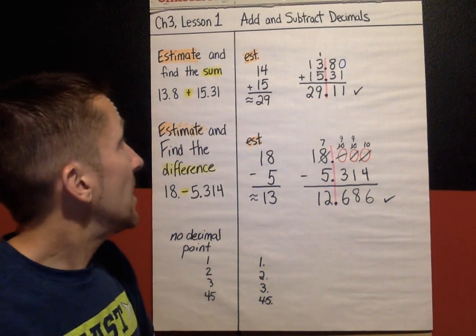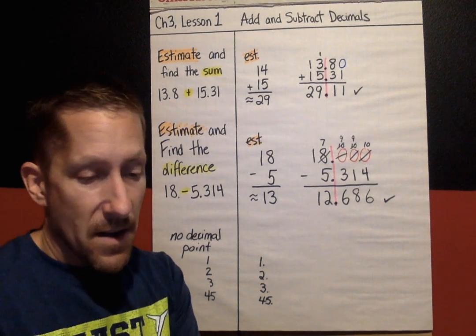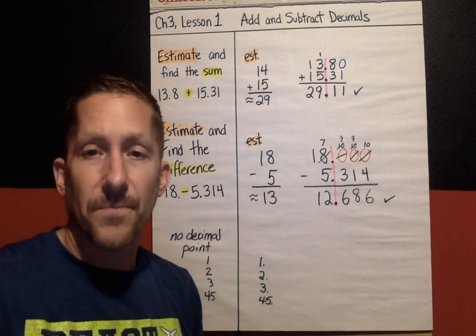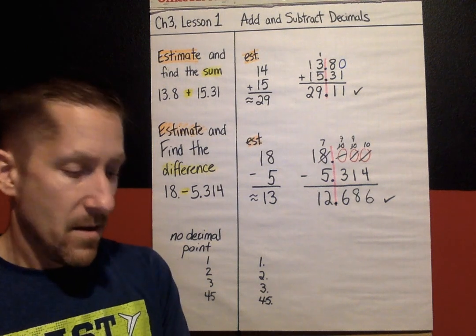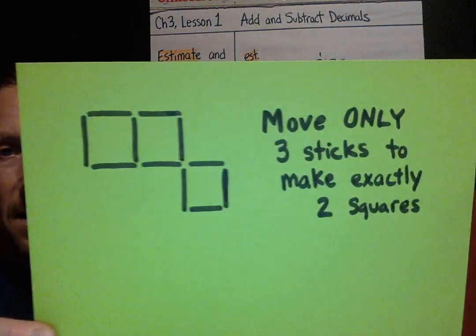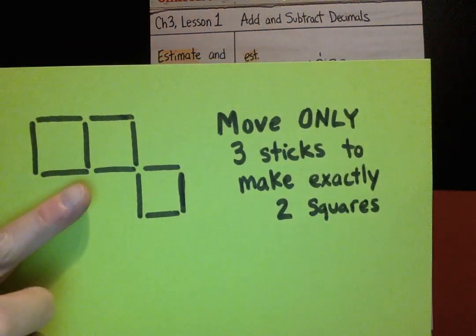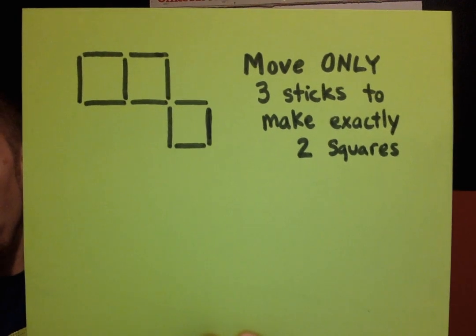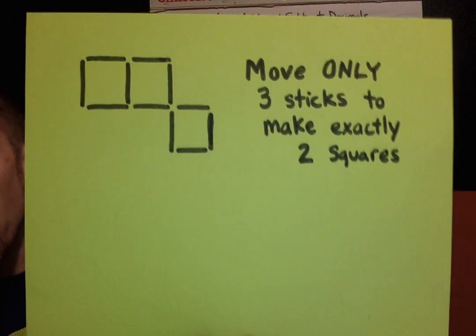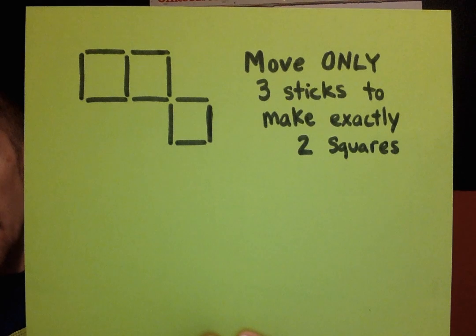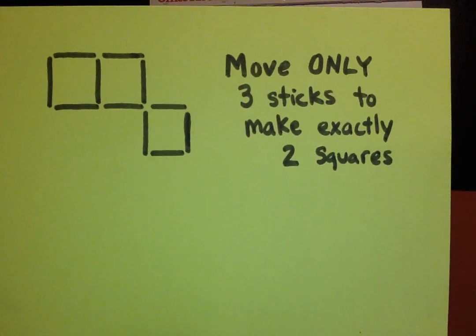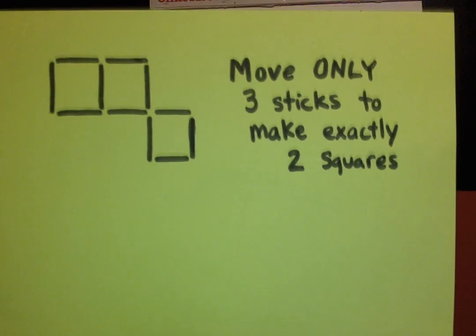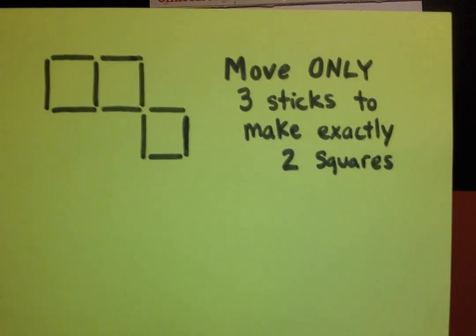Alright. That's it for Chapter 3, Lesson 1. We do have a hidden treasure puzzle today. And here it is. In this design, right here, in this design, the puzzle today is you can only move 3 sticks. And you have to make exactly 2 squares. So, in that design that you see, move 3 sticks and create 2 squares.